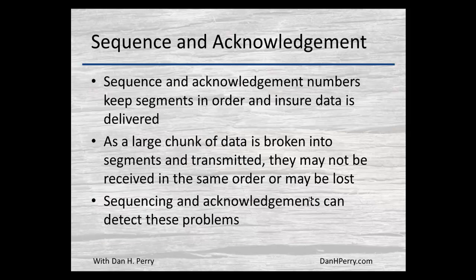The sequence and acknowledgement numbers are there to keep the segments in order and make sure the data is delivered. When we've got a large chunk of data, we can't efficiently transmit it as a single piece — it has to be broken down into smaller segments. If we tried to transmit an entire 5 megabyte file, or today a 2 gigabyte file, all at once, that would clog up the network. If there were errors during the transmission and we had to restart, that would generate a lot more traffic. By breaking data into segments, we have a manageable amount of data, and if only one segment is lost, that's all that needs to be retransmitted. So we use sequencing and acknowledgements to detect these problems.